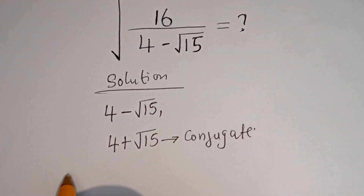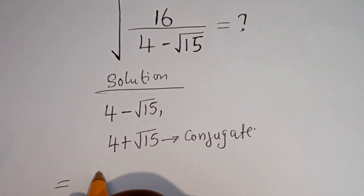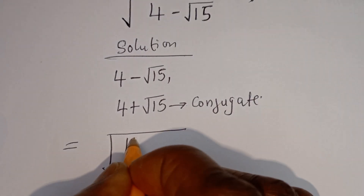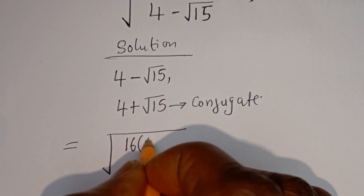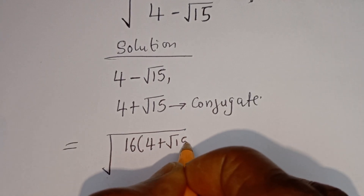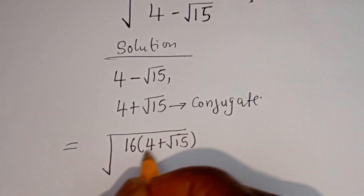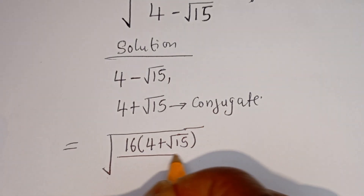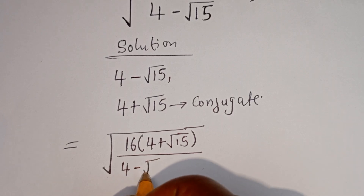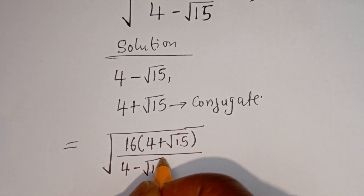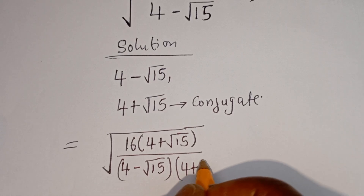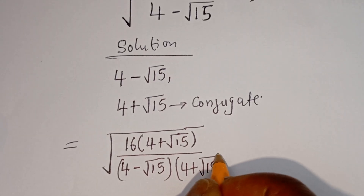Now we have square root of 16 multiplied by 4 plus root 15, divided by 4 minus root 15 multiplied by 4 plus root 15.